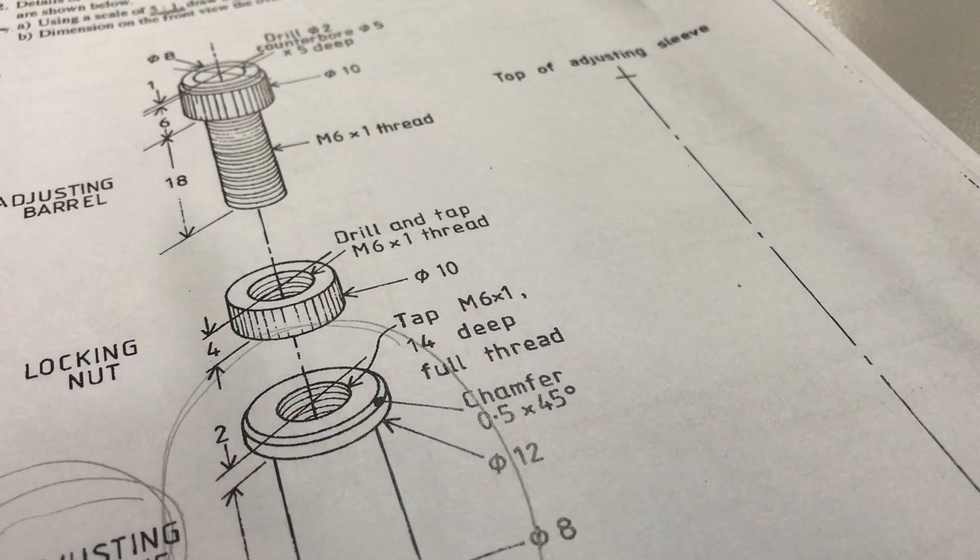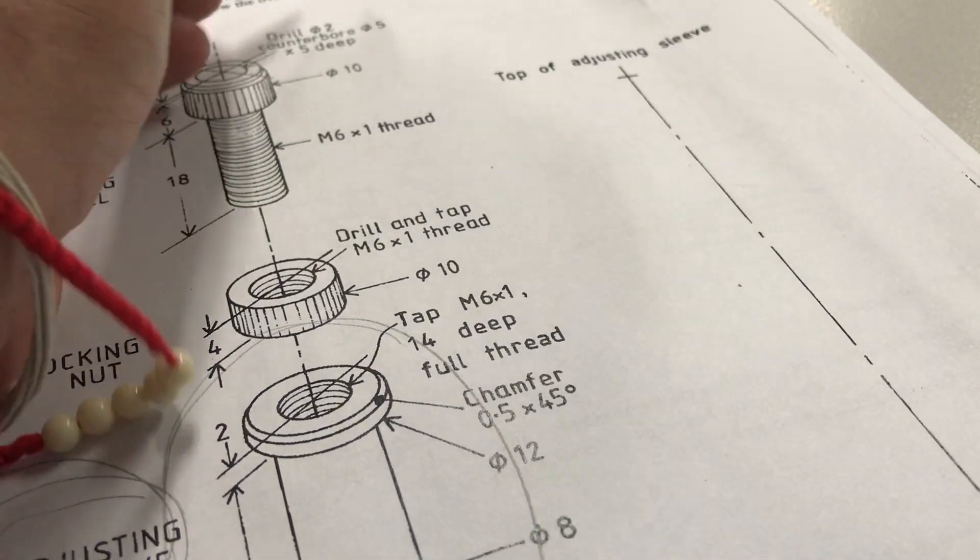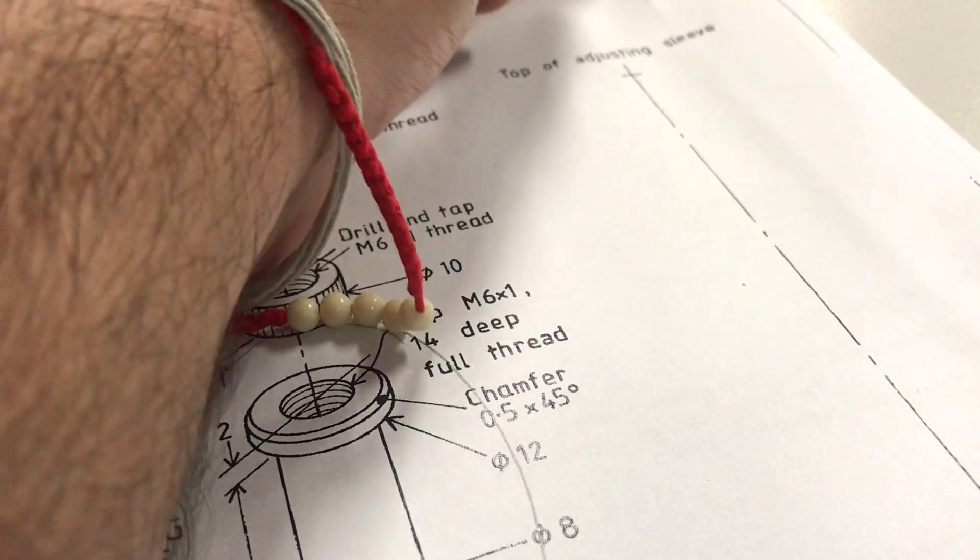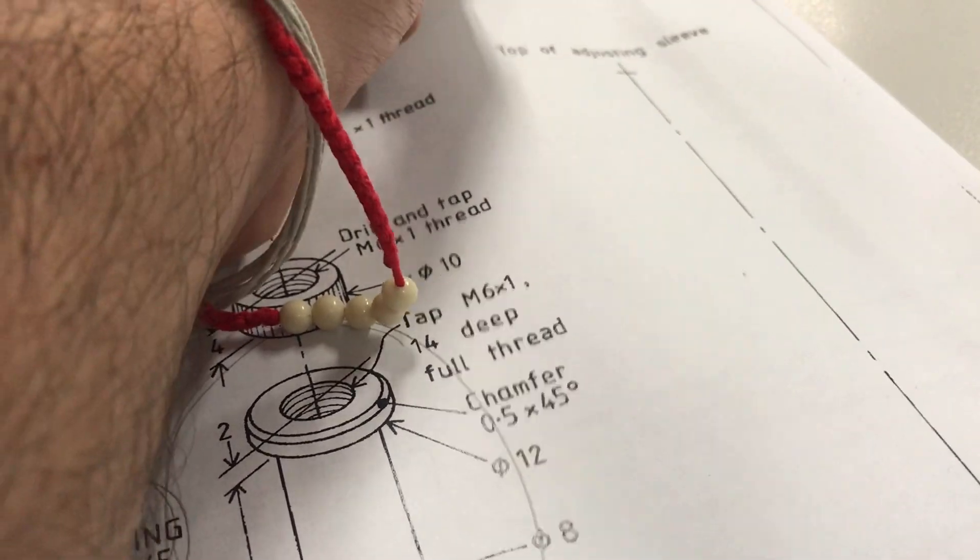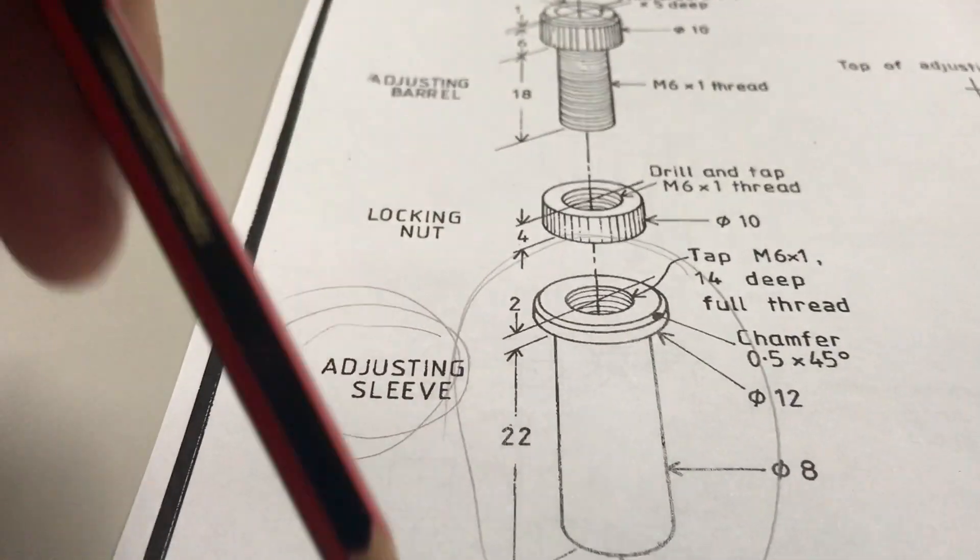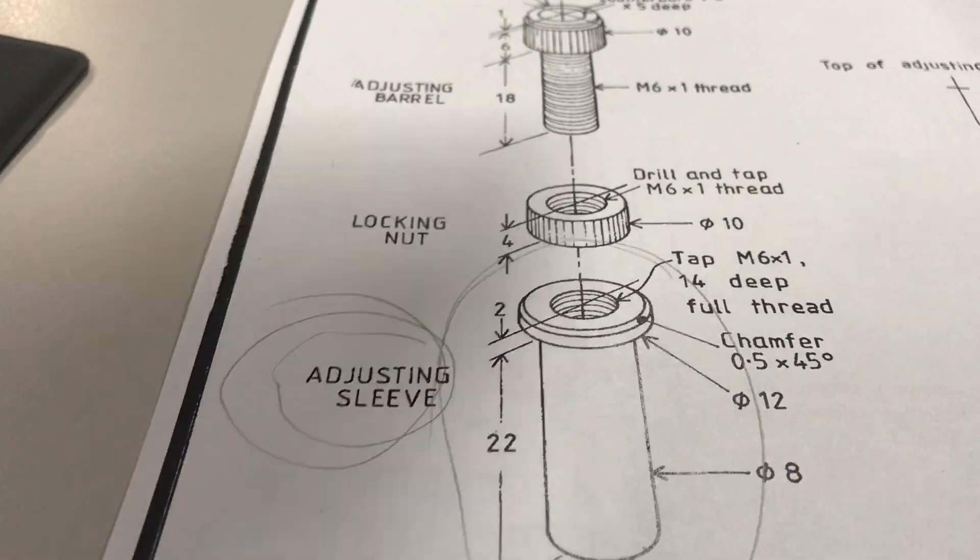And it says dimensions on the front view of the overall length, okay, so that's one measurement that's going on. And the size of the chamfer is the other measurement. So there's only two measurements. So you've got lots and lots of measurements on this adjusting sleeve, but they're only asking for two. So that's the first thing that you really need to break down to make sure you understand it.